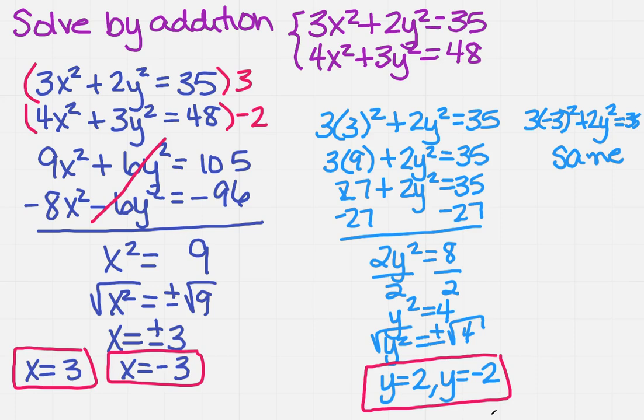Now what I need to do is I need to find a solution set. So if I know it's going to be the same y's for the positive 3 and the minus 3, that means I'm going to have four solutions. So if I have the positive 3, it's going to be tagged up with a 2. I'm also going to have a positive 3 with a minus 2.